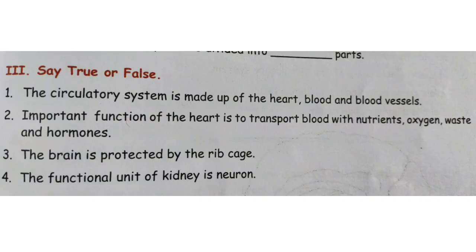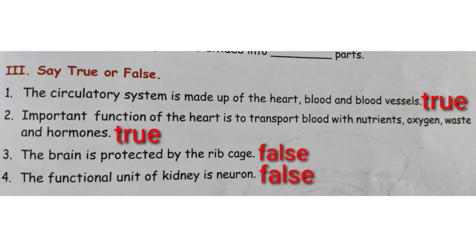Number 4: The functional unit of the kidney is neuron. Neuron is actually called nephron, so the statement that the functional unit of the kidney is neuron is false. Number 4 is false. Please check your answers, children.